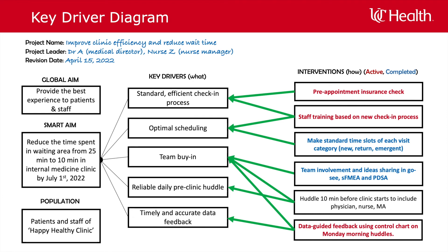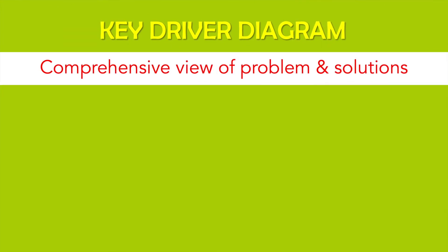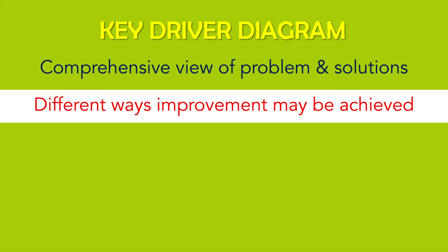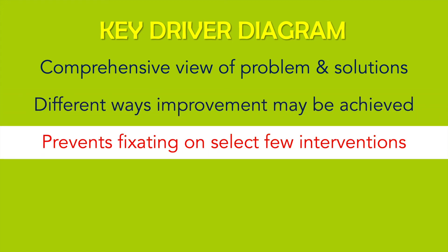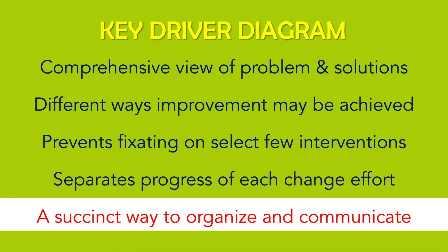Intervention ideas can come from several places including brainstorming sessions with team members, staff or patient feedback, literature review, SFMEA, best practices, and exploring change concepts. By using a key driver diagram we develop a broad and comprehensive view of the problem and its solutions. It makes us think of different ways that improvement can be tested and saves us from the trap of giving up on improvement prematurely. It prevents us from fixating on one or two preconceived ideas of interventions. It enables us to separate which change effort is going well and which one needs more work. And it's a nice succinct way to organize and communicate the improvement efforts, especially when dealing with complex systems, multidisciplinary teams, and stakeholders.